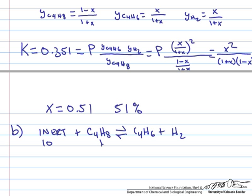And we start with 10 moles of inert. Let's say we have 1 mole of C4H8. And again, none of our products. So again, minus X, plus X, plus X, and none of our inert changes.